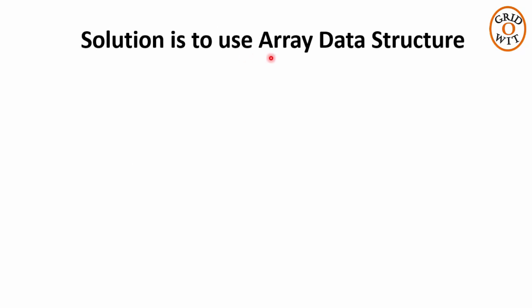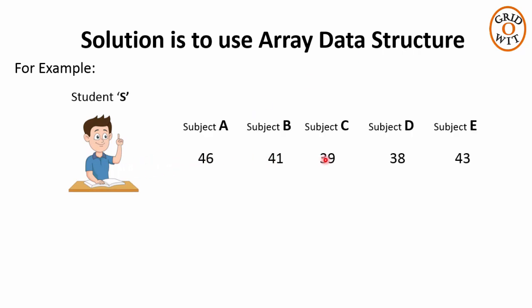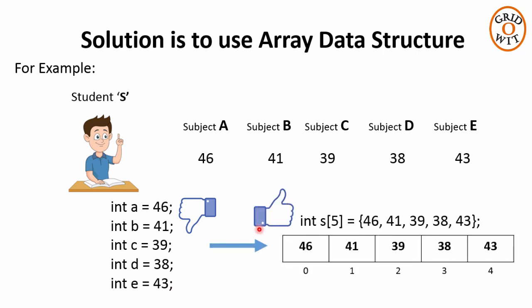The solution is to use an array. For example, consider a student s, and these are the marks he scored in 5 subjects: subject a, b, c, d, and e. Now all these 5 values are related to same student s. So it is not a good idea to store these values in 5 different variables. Instead, we can store in an array of integers of size 5. So this array represents marks of student s in 5 subjects.